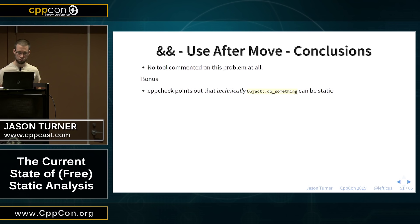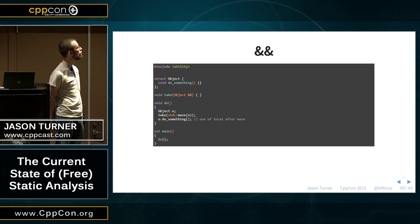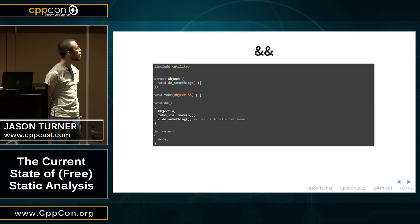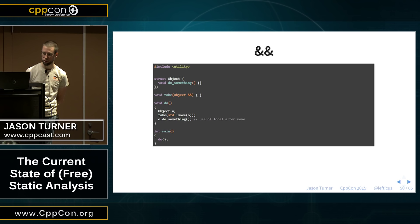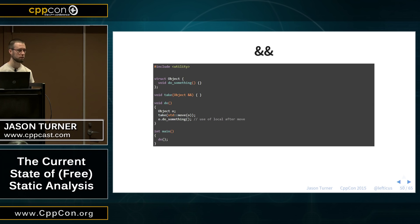As a bonus, CppCheck points out that do_something could be a static member because it's not actually touching any object data. That's kind of handy. It calls it an optimization issue or poor performance kind of code thing — I guess the compiler can better optimize static members.